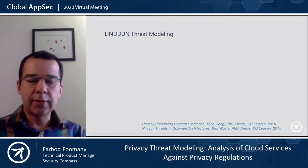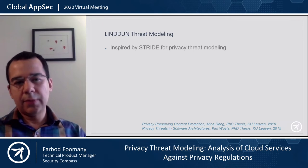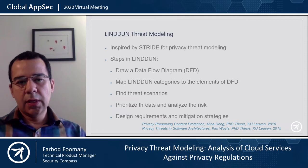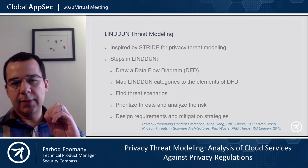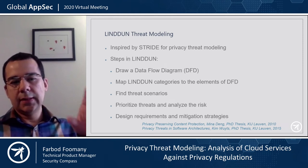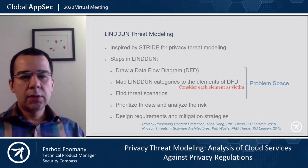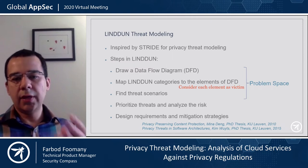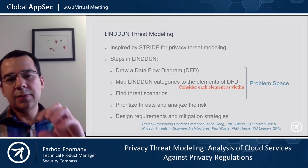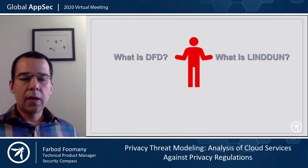LINDDUN was inspired by STRIDE, which is used for security threat modeling. The steps in LINDDUN are: you draw a data flow diagram, then you map LINDDUN categories to the elements of the data flow diagram, find the threats, then prioritize, analyze them, and design mitigation methods. The first three steps are probably in the problem space — you try to find the problem, and that is where we are focused today.